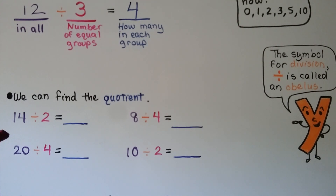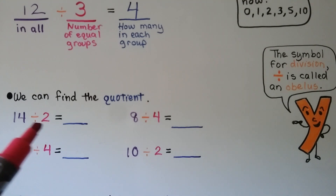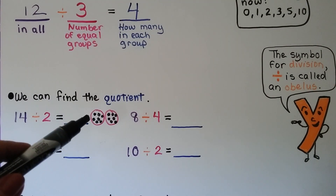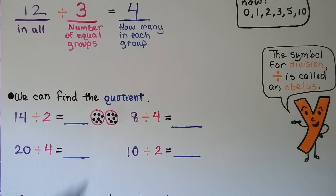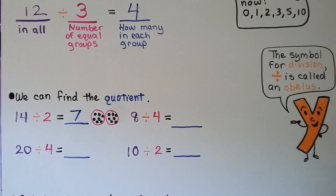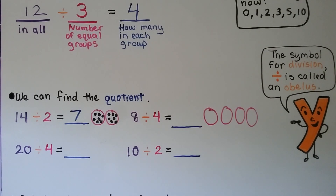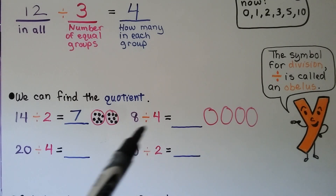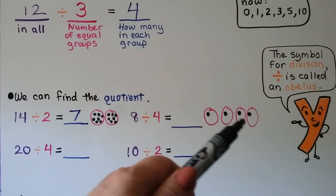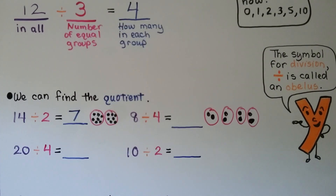We can find the quotient for these division problems. For 14 divided by 2, we make two circles and go back and forth placing counters until we've placed 14. There are 7 in each group, so 14 divided by 2 is equal to 7. For 8 divided by 4, we make four circles and fill them one counter at a time until we've used 8. We put 2 in each group, so 8 divided by 4 is equal to 2.